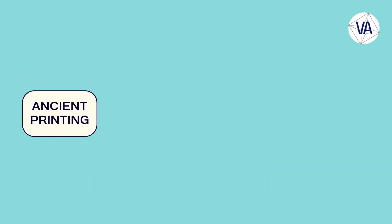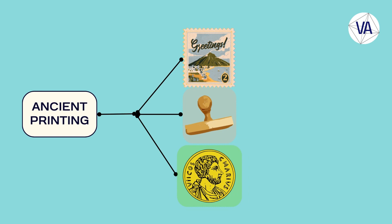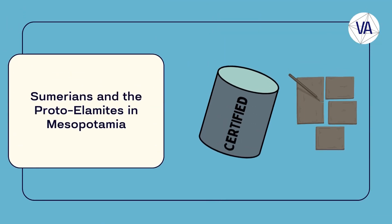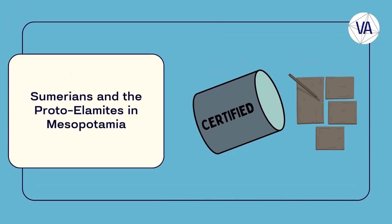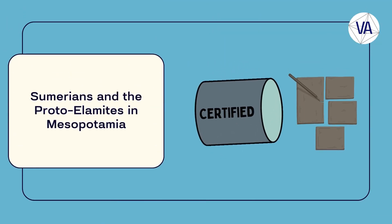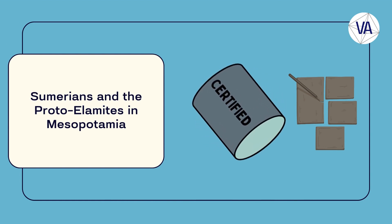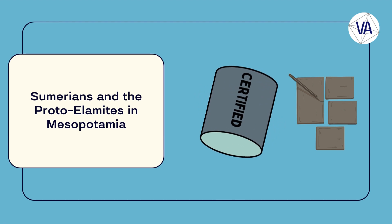The earliest forms of printing date back to ancient times, when people used stamps, seals, and coins to imprint patterns and symbols on clay, wax, or metal. Around 3000 BC, the Sumerians and the Protolomites in Mesopotamia used cylinder seals to certify documents written on clay tablets. These seals were carved with designs that could be rolled over wet clay to create impressions.